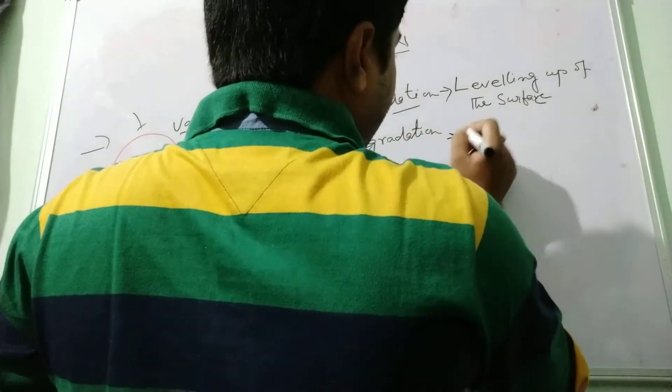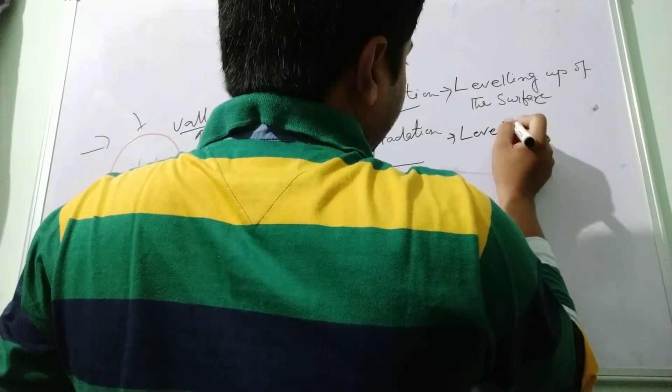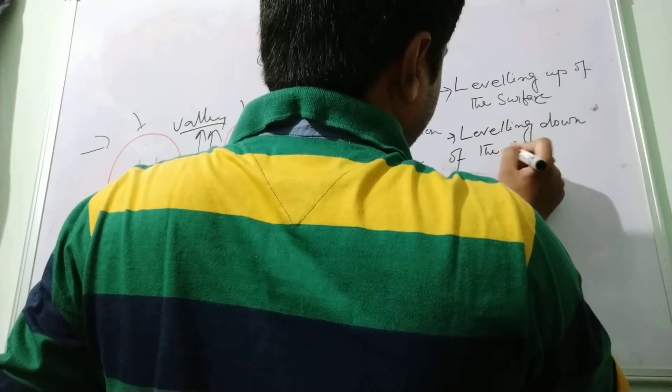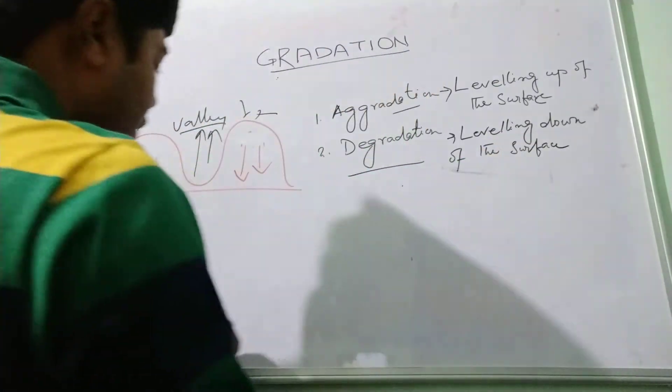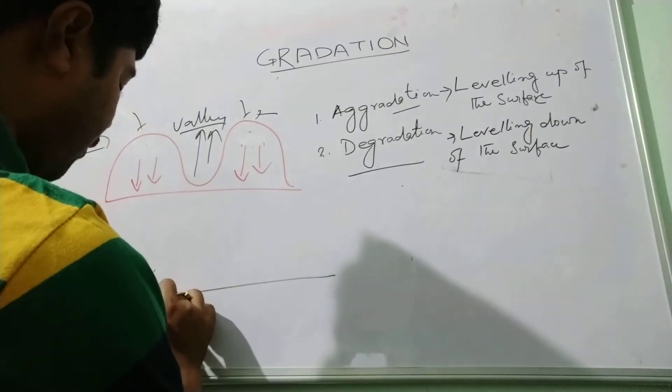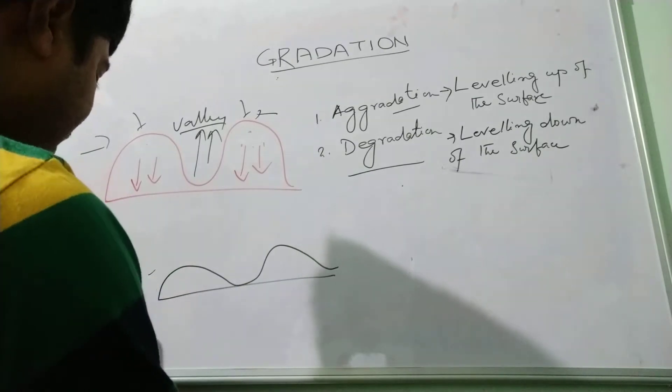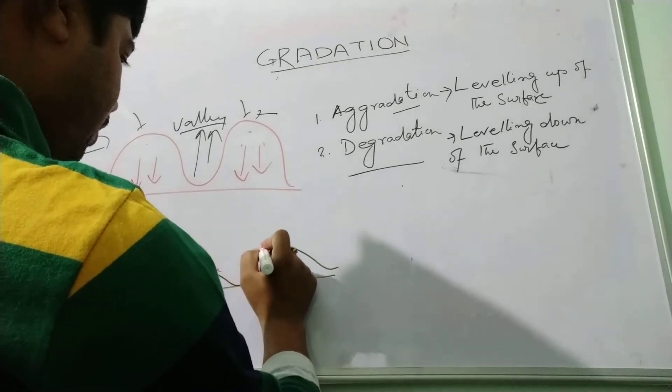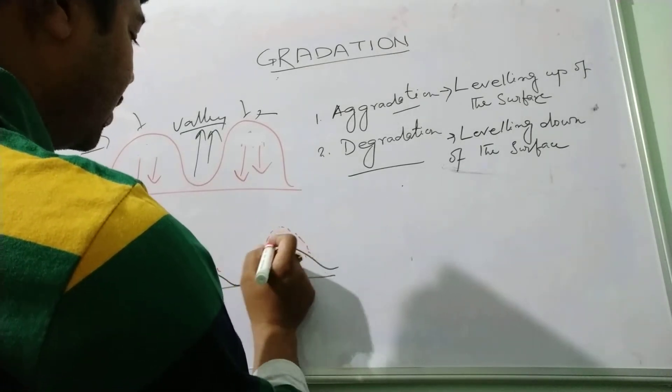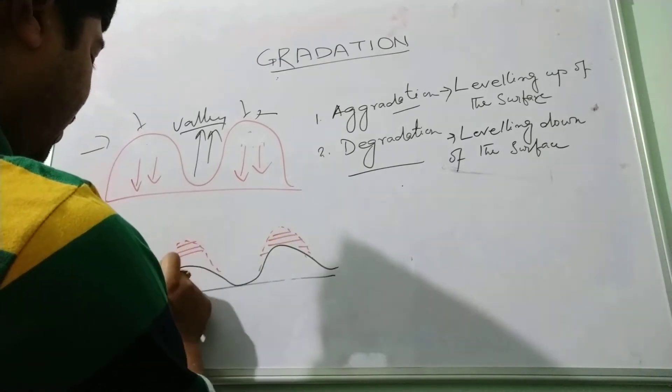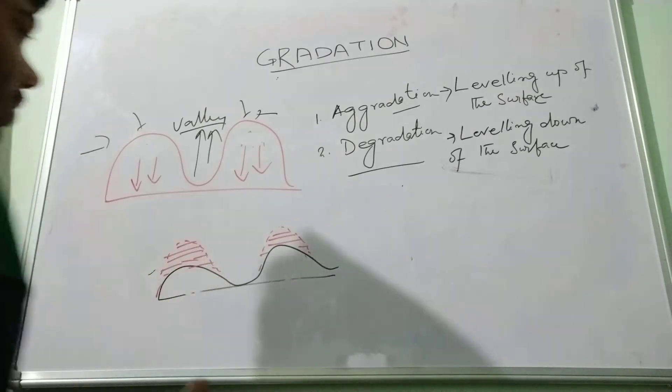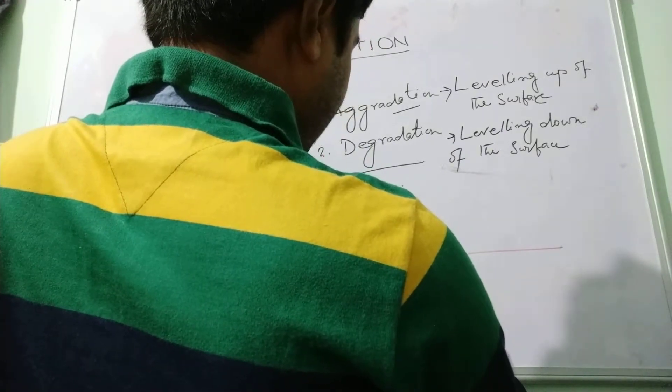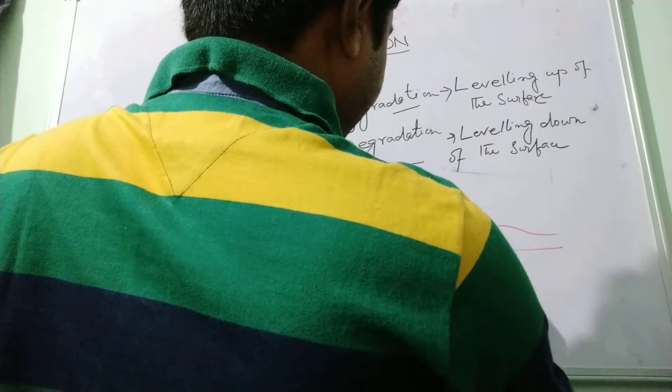Whereas degradation means leveling down of the surface. See, for example, this is a surface and in the earliest stage the surface was like that. So this part has been eroded by different geomorphic agents. So this is a degraded surface. Now the surface looks like that. This is the gradation process.